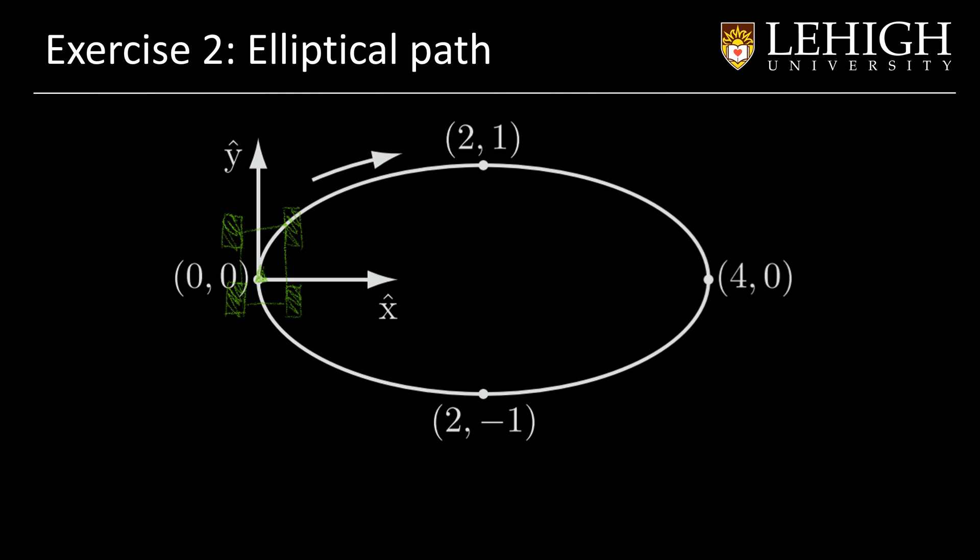And finally, it will end up in the origin again. It will follow the ellipse in this way and it will keep the direction of the robot always pointing in the tangent vector of the ellipse.